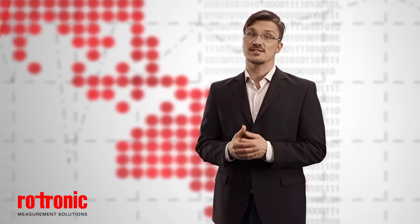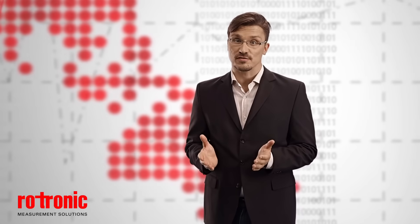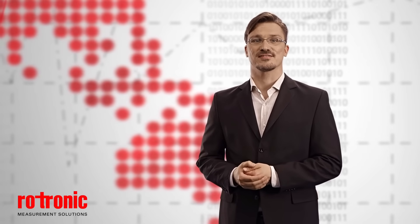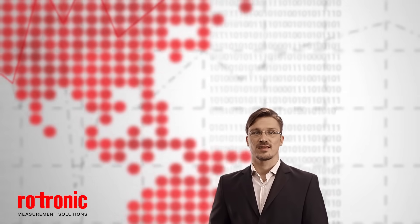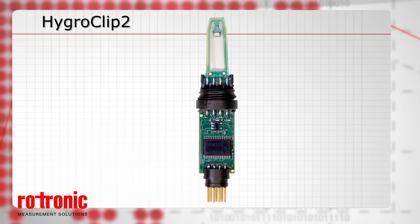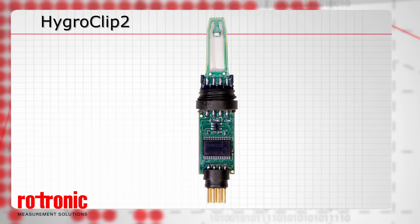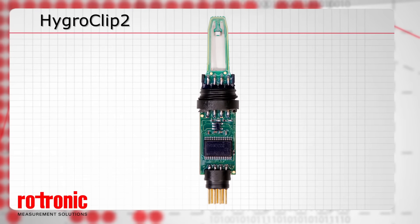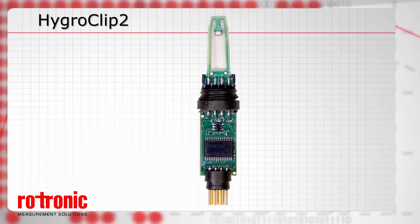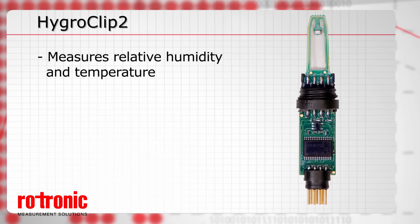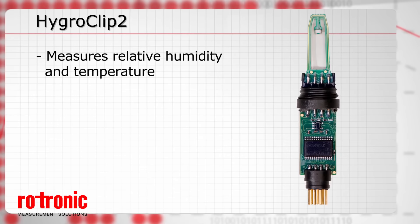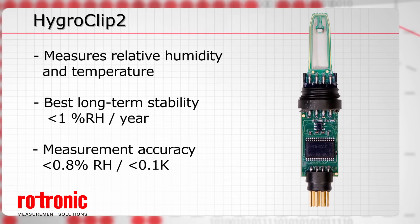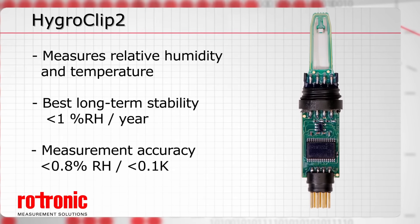Rotronic offers an extensive range of solutions for all these and many other applications. The HygroClip is the most versatile probe available from Rotronic and forms the basis of our product portfolio. It measures relative humidity and temperature, ensuring the best long-term stability and maximum accuracy.